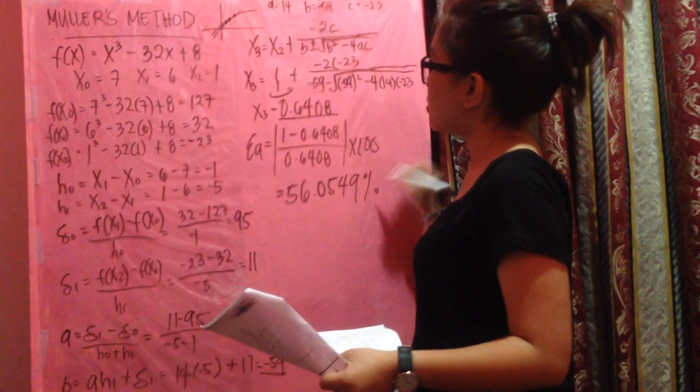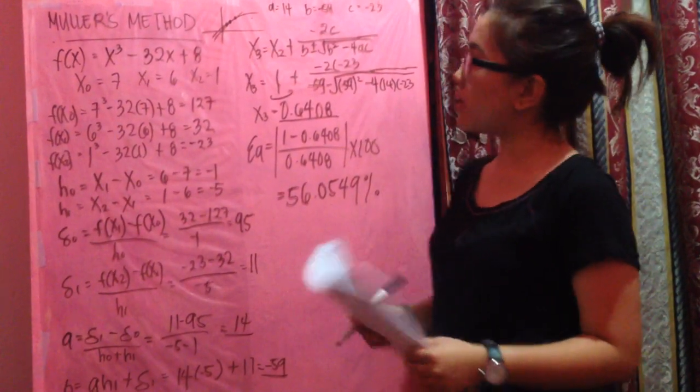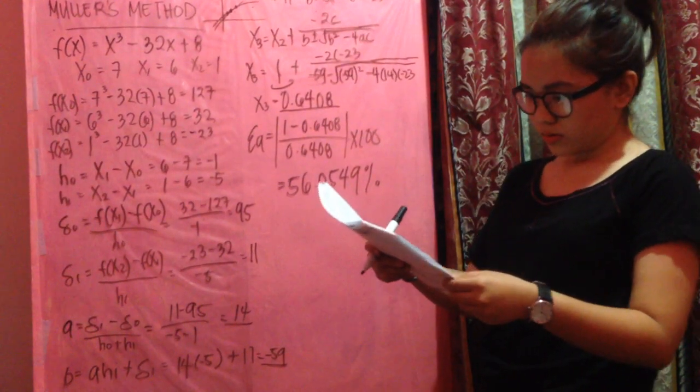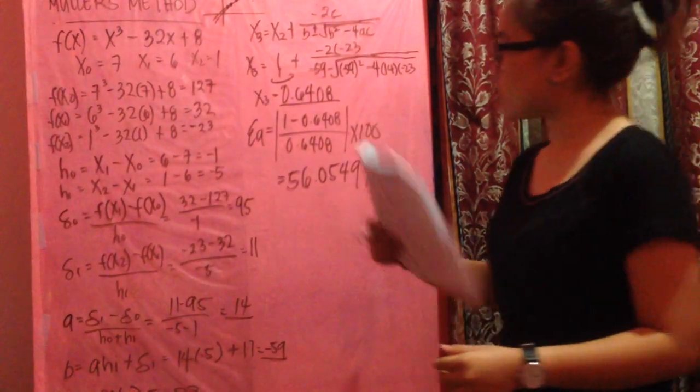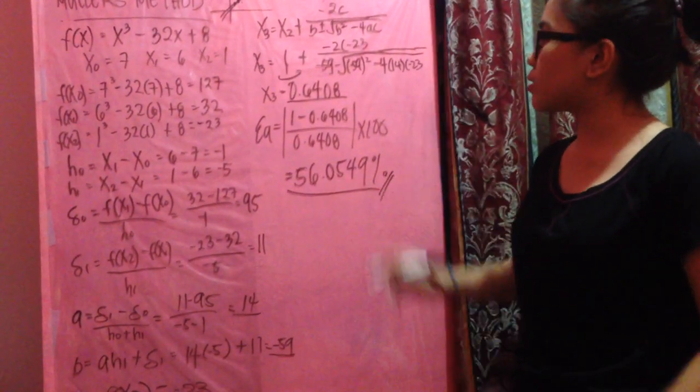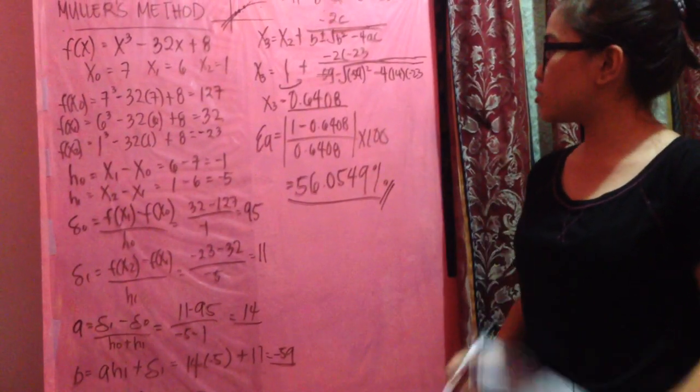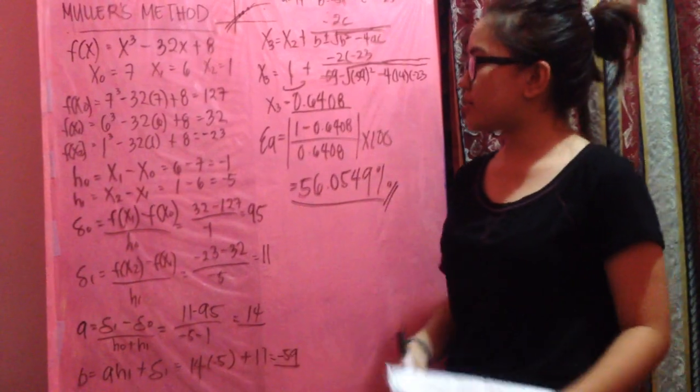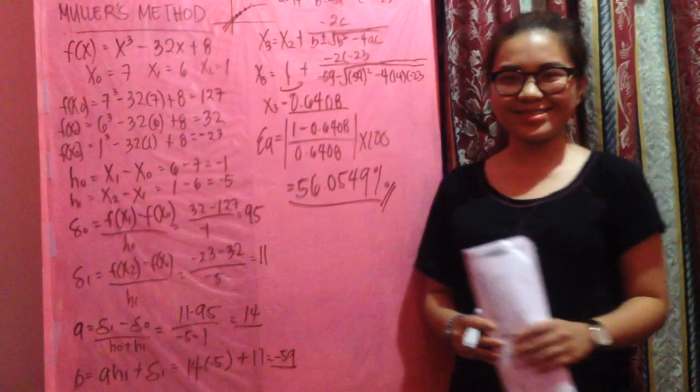Same procedure will be applied until the percentage error reaches 0 percent. So iterate and iterate until the error is 0 in time.